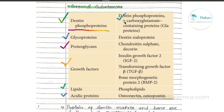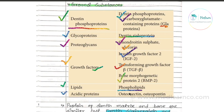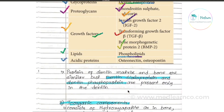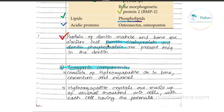Dentin phosphoproteins include gamma-carboxyglutamate proteins. Glycoproteins include dentin sialoprotein. Proteoglycans include chondroitin sulfate and decorin. Growth factors include insulin-like growth factor 2, transforming growth factor, and bone morphogenetic protein 2. Lipids are phospholipids, and acid proteins include osteonectin and osteopontin. Notably, dentin sialoprotein and dentin phosphoproteins are unique to the dentin matrix.